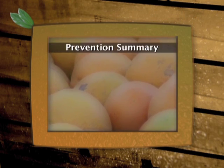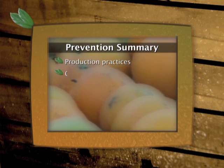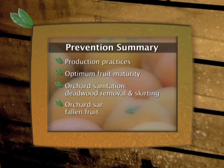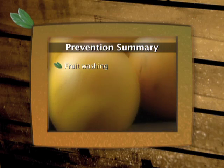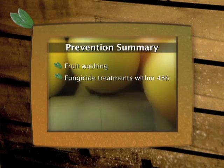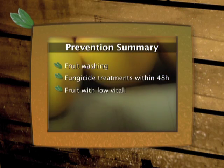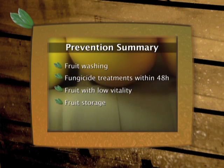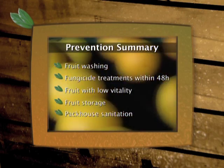Infection by most post-harvest diseases can be prevented by production practices that promote tree vigour and fruit quality, not packing over mature fruit, deadwood removal and skirting, regular removal of fallen fruit, handling fruit with care during picking and transport, washing fruit in sanitized water when it enters the packhouse, treating fruit with the prescribed dosages of fungicides, ensuring sufficient residues as soon as possible but no longer than 48 hours after picking, not packing fruit with low vitality, storing fruit at 4.5 degrees Celsius as soon as possible after packing, not storing fruit for long periods and regular packhouse sanitation.